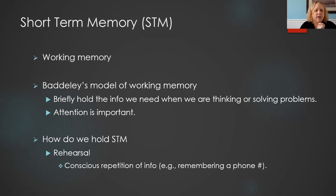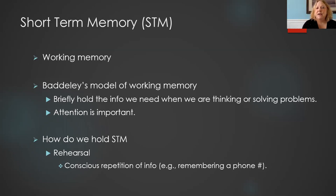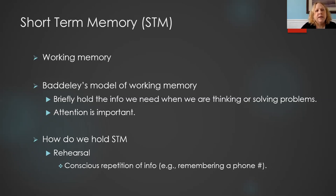Working memory — we're going to talk about Baddeley's model of working memory. Basically, working memory is where we take information we're trying to remember and try to manipulate or use it. This is where attention becomes extremely important. An example: in your head, add the following two numbers together — 1,874 plus 3,326. The answer is 5,200. This is an example of short-term memory because we're holding two pieces of information and manipulating them. One thing we often do to keep information in short-term memory until we can transfer it to long-term memory is rehearsal.